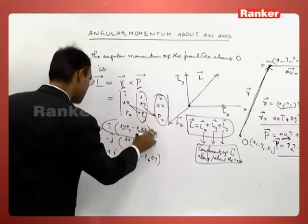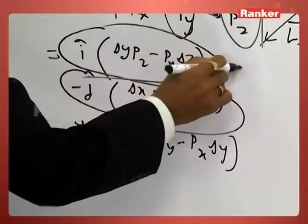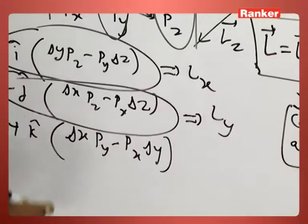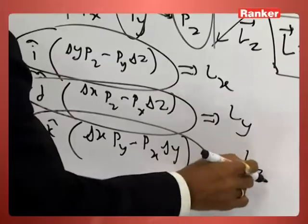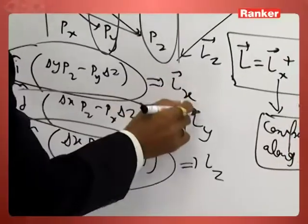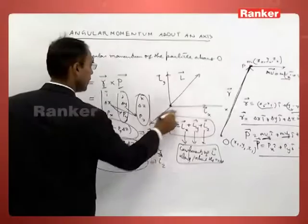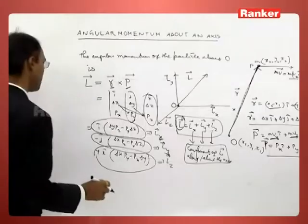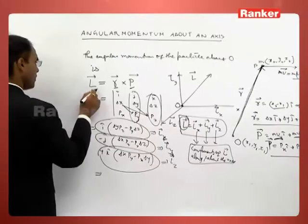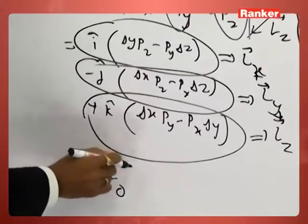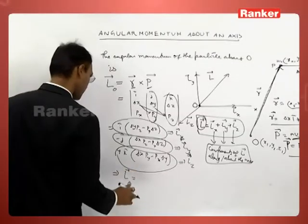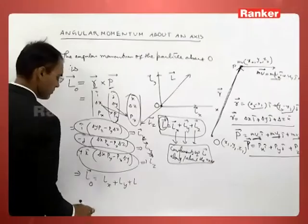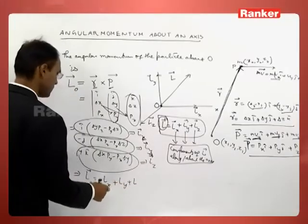So we get three components: the x-component is Lx, the y-component is Ly, and the z-component is Lz. Adding these three components gives the net angular momentum measured with respect to the given reference point. Therefore, the angular momentum about a point can be written as the sum of angular momentum components along the respective axes.